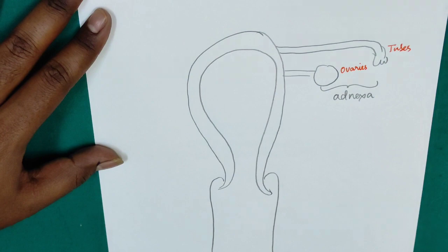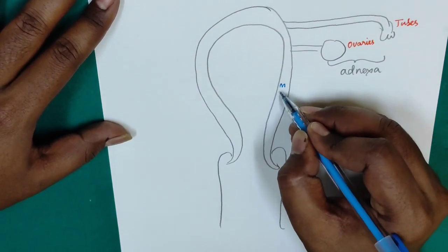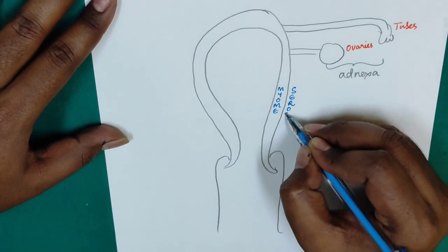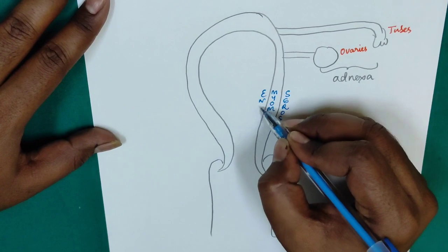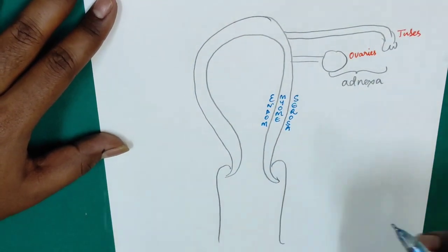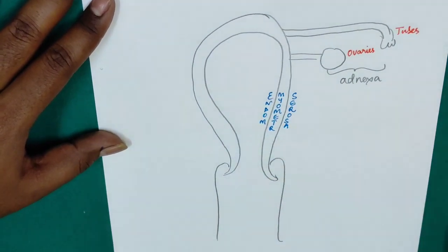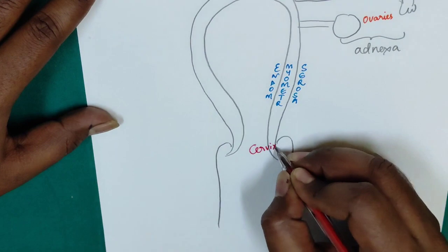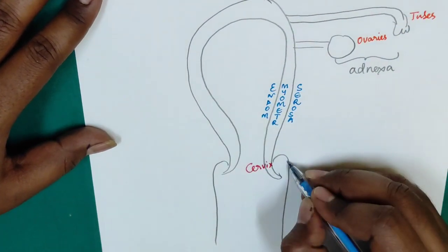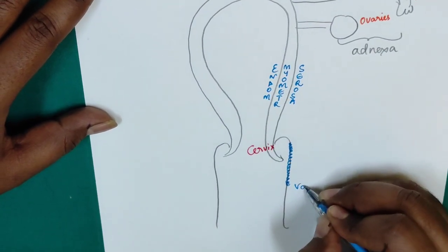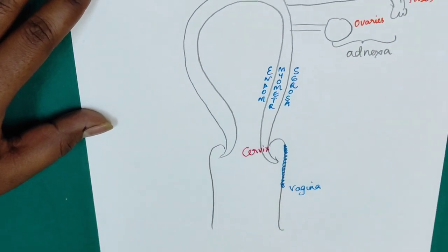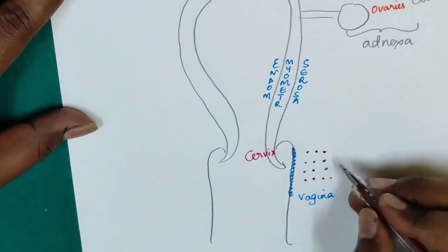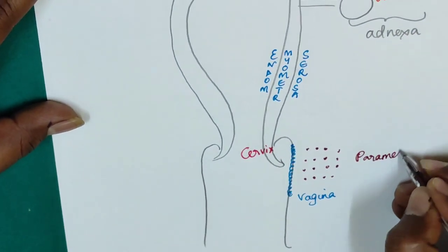This uterus, that is corpus uteri, has got three layers. One is myometrium. Next to myometrium is serosa. And the first layer you all know is endometrium. So first layer is endometrium, next layer is myometrium, next layer is serosa. And this is cervix, this is vagina. Next to vagina there will be parametrium.